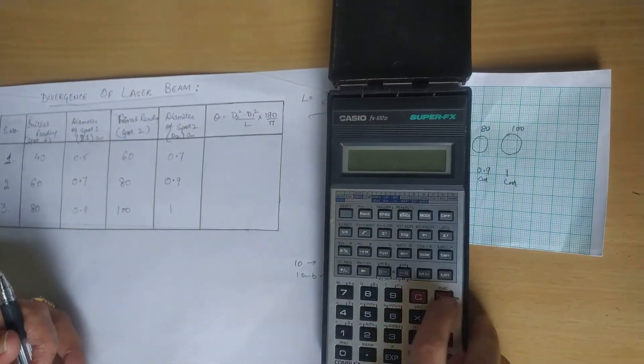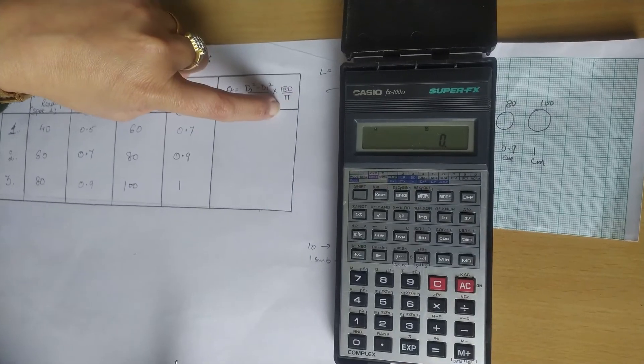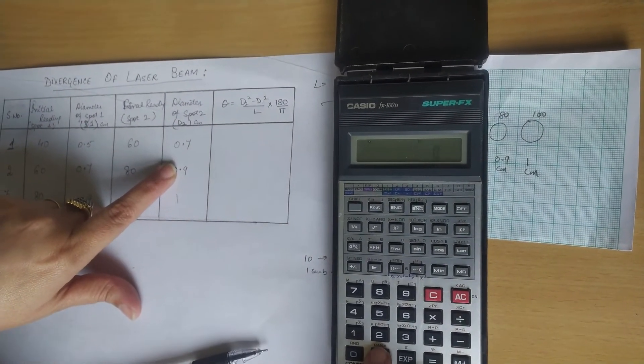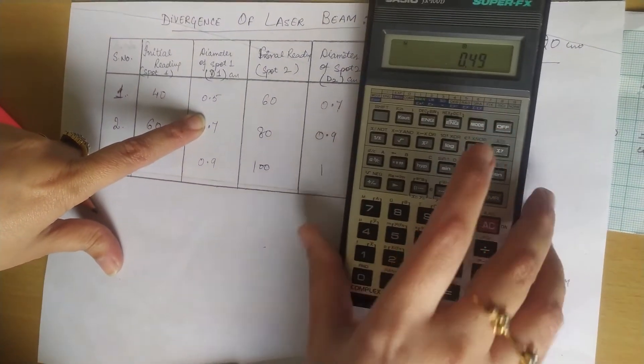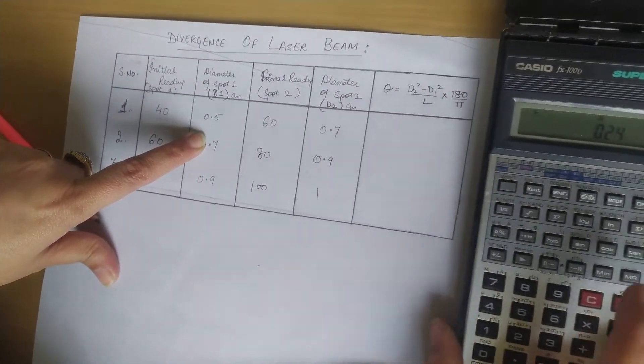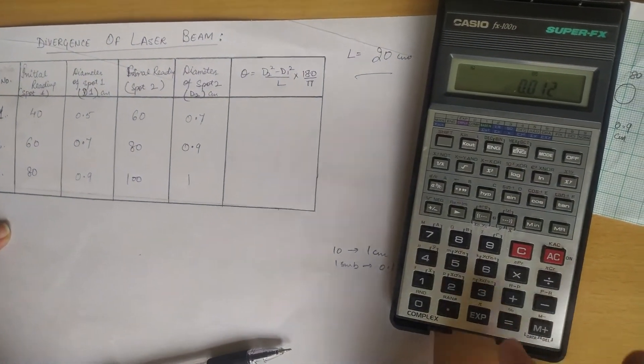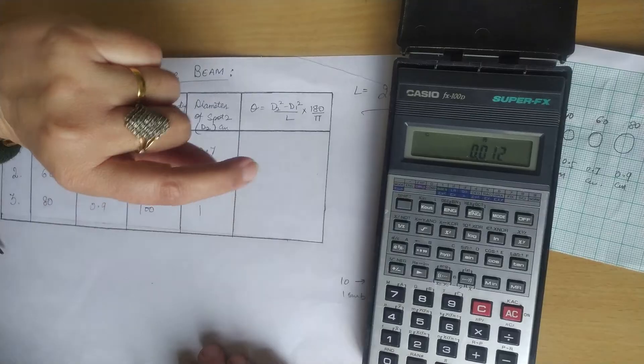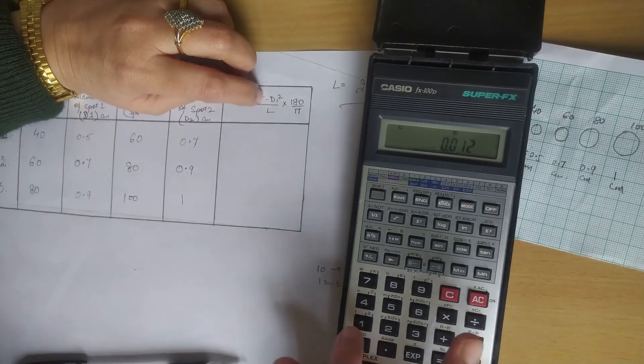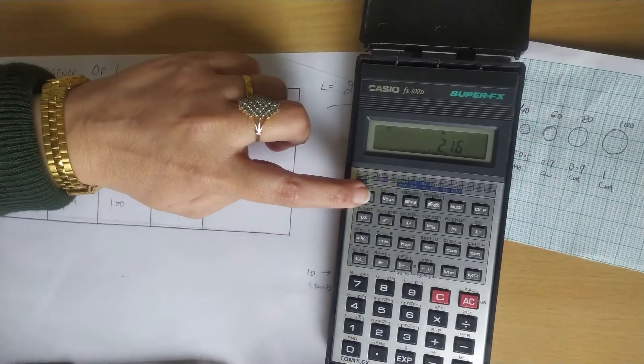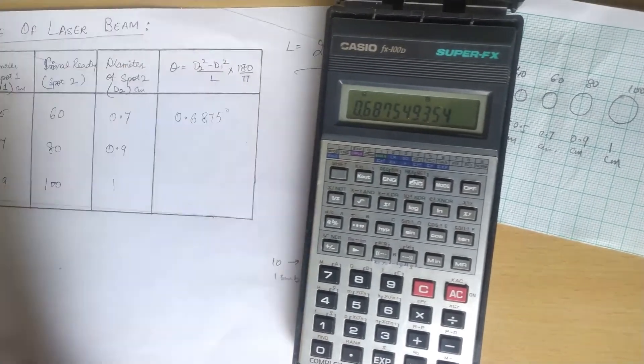Now to calculate it. Formula is (D2² - D1²) / L × 180/π. Here the reading is 0.7² - 0.5² = 0.24, divided by 20 cm. Since this is in radians, to change it to degrees I multiply by 180 and divide by π. So the answer is 0.6875 degrees. This is the first reading.